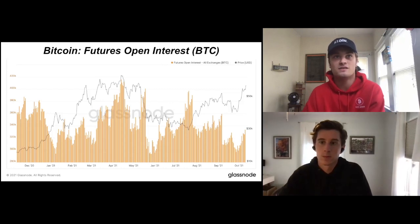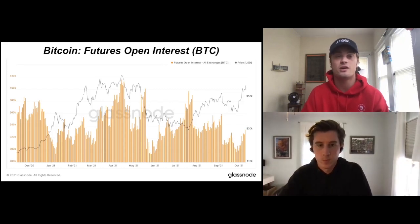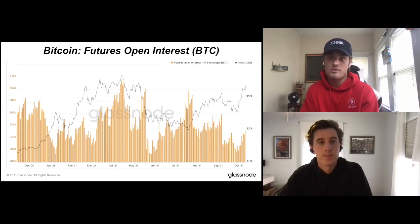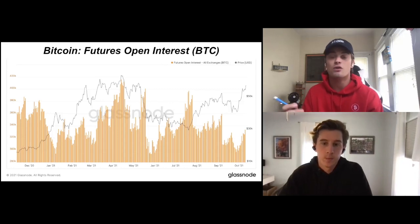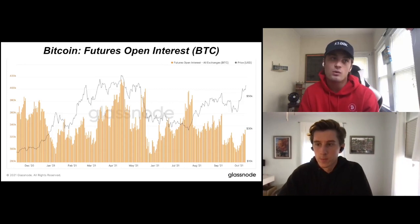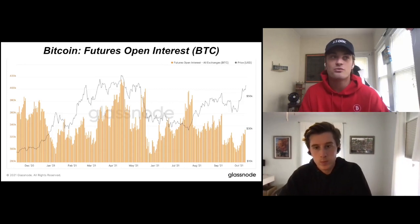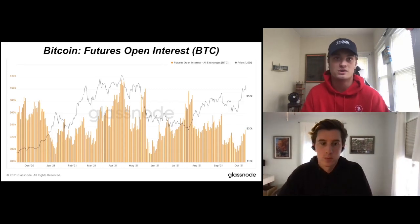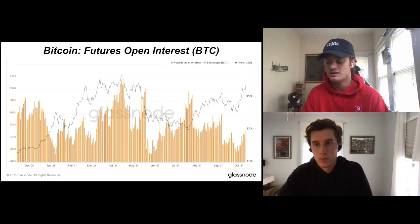We're in quite a healthy place here. You can see how the market topped right when the futures open interest topped. And in July, when you had that massive short squeeze from the bottom at 30k, the open interest also spiked — that's both the long and short side of things. Here we are with open interest below 340,000 Bitcoin — a really healthy spot in the market, and we should be encouraged by seeing this.